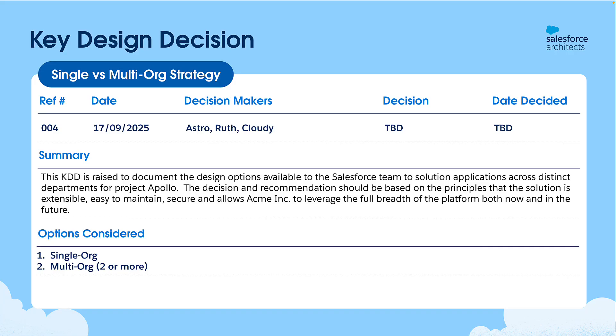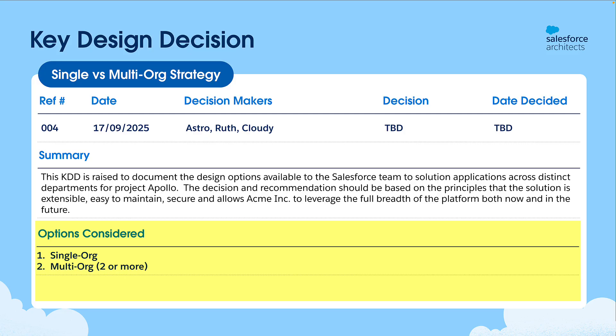A good key design decision has a summary, the options considered, the decision makers, and eventually an outcome.